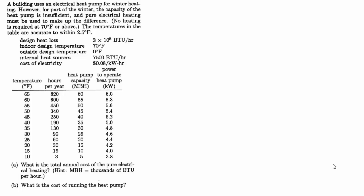Welcome back to 101 Solved Mechanical Engineering Problems. This is HVAC number five and this problem is all about heat pumps. A building uses an electrical heat pump for winter heating. However, for part of the winter, the capacity of the heat pump is insufficient and pure electrical heating must be used to make up the difference. No heating is required at 70 degrees or above. The temperatures in the table are accurate to within two and a half degrees.